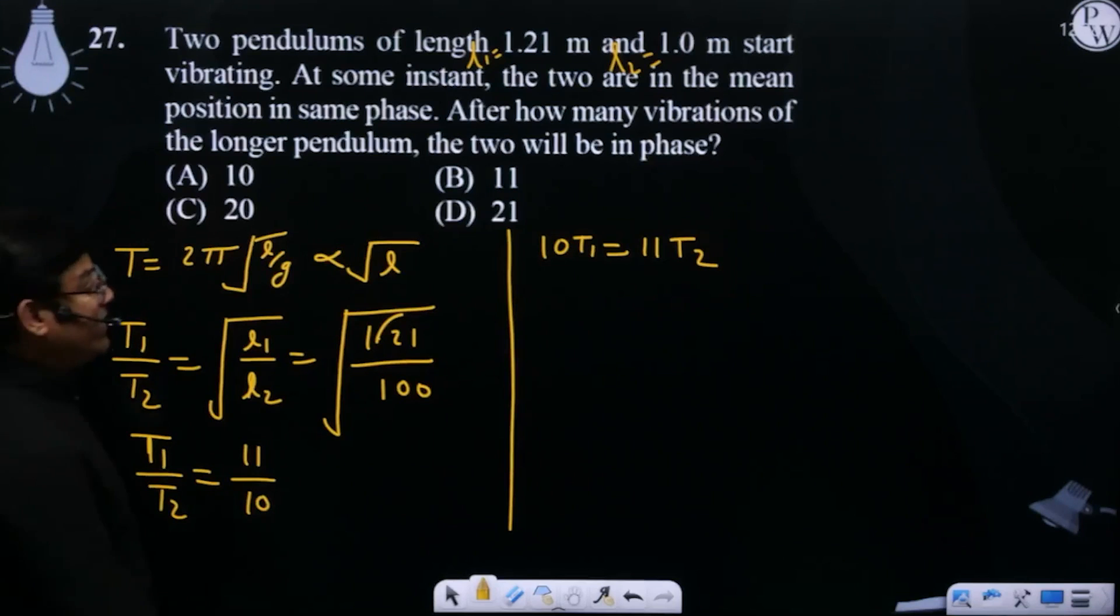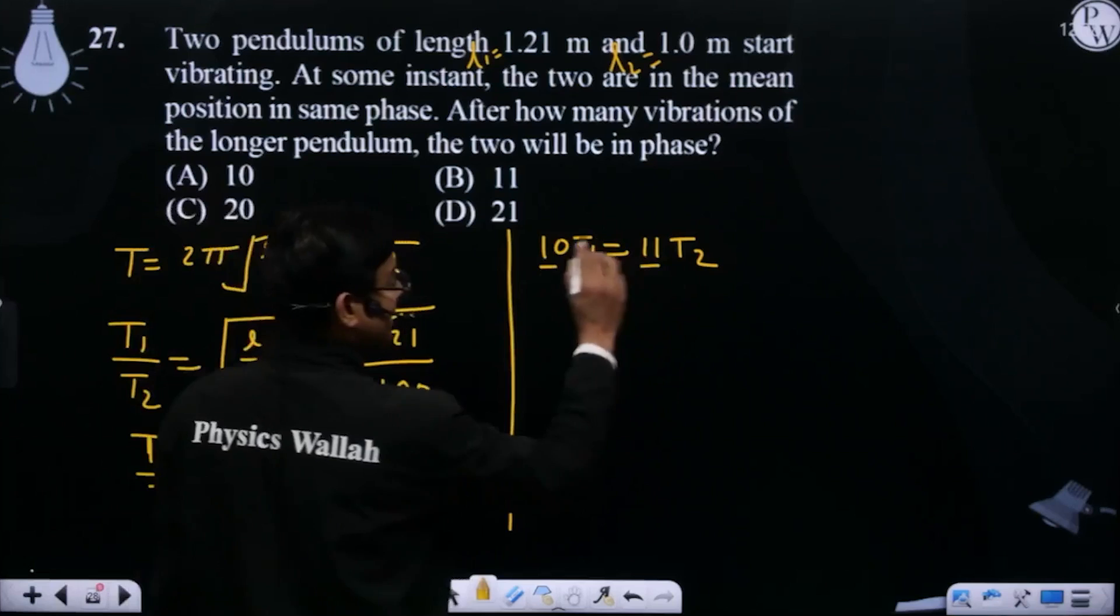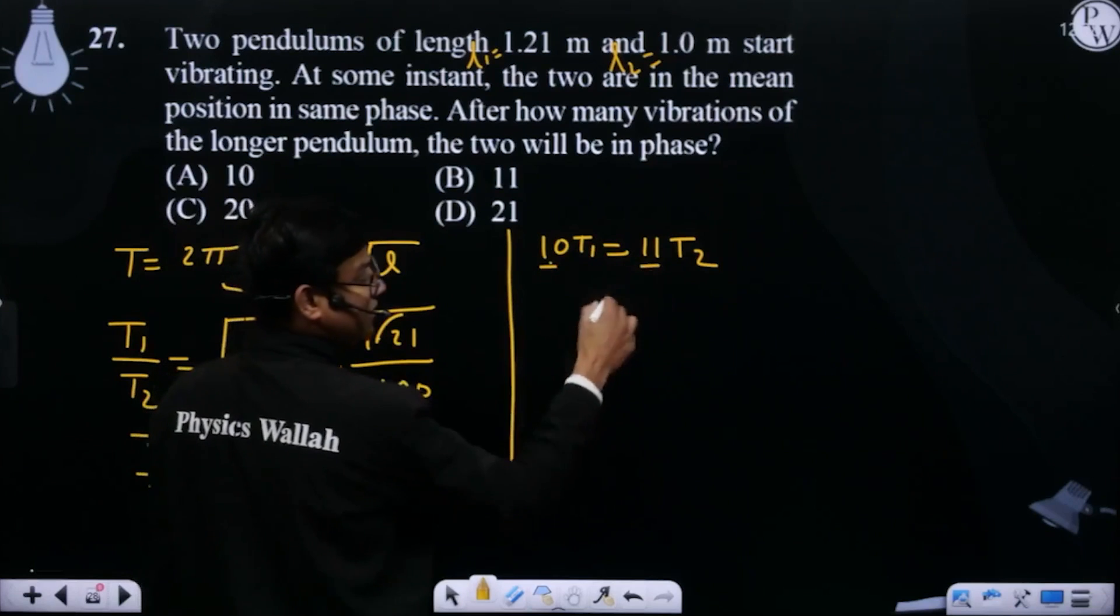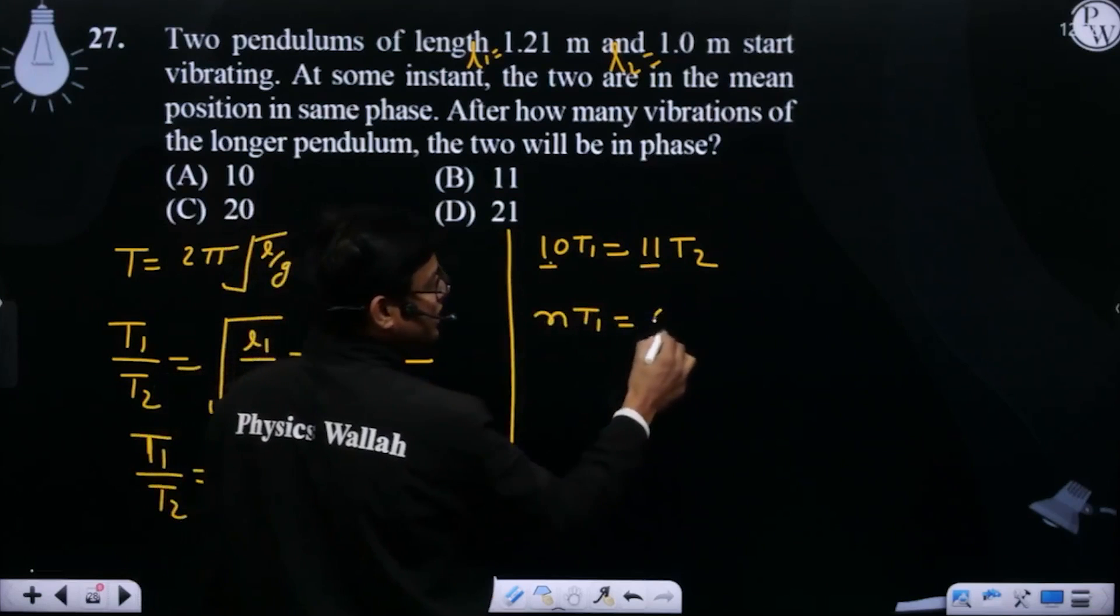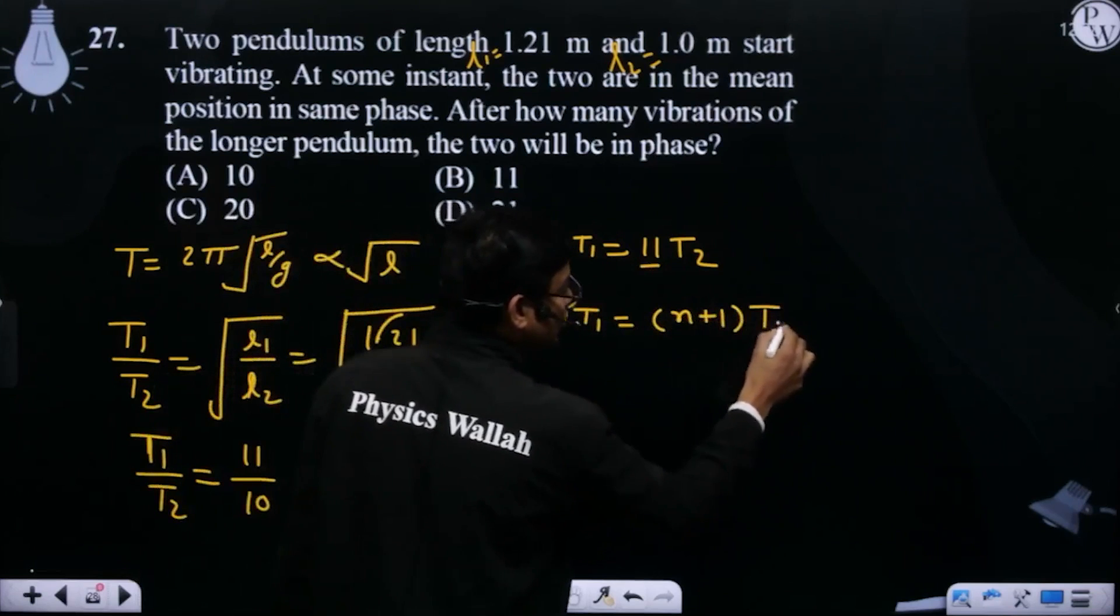If n is the number of vibrations, then nT1 = (n+1)T2.